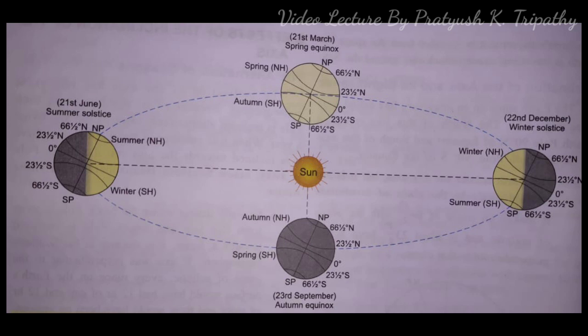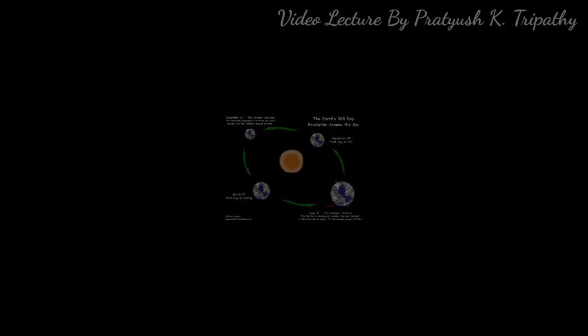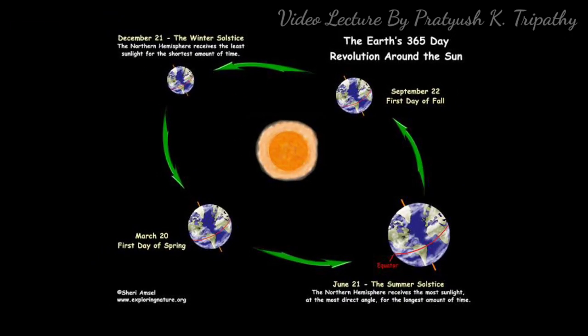These two days are termed as spring and autumn equinoxes respectively. After the spring equinox, the sun appears to move north and is directly overhead Tropic of Cancer on June 21st. This is termed as summer solstice. The Northern Hemisphere has its longest day and shortest night on June 21st.